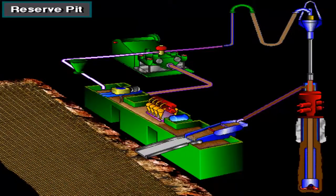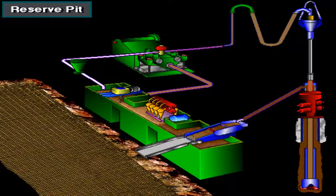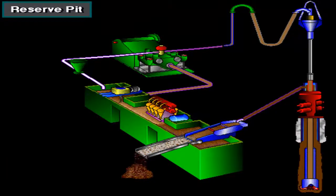If the rig is on a migratory bird flyway, the operator covers the reserve pit with netting to keep waterfowl from landing in it. Land rigs drilling in environmentally sensitive areas will not have a reserve pit. Instead, wastes and runoff are hauled to an approved waste disposal area.